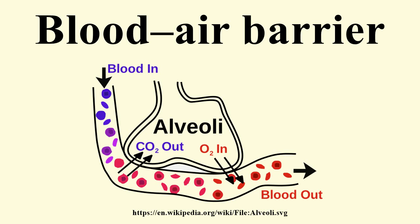This blood-gas barrier is extremely thin to allow sufficient oxygen diffusion, yet it is extremely strong. This strength comes from the type 4 collagen in between the endothelial and epithelial cells. Damage can occur to this barrier at a pressure difference of around 40 mmHg.